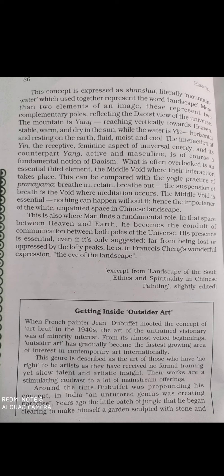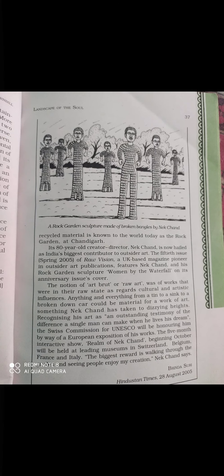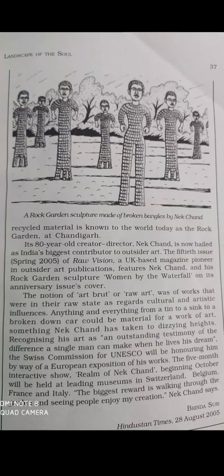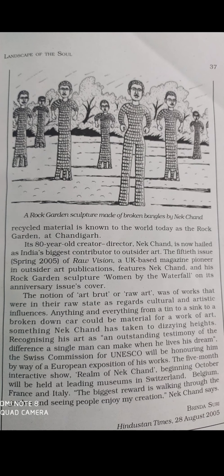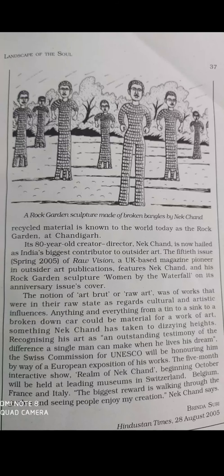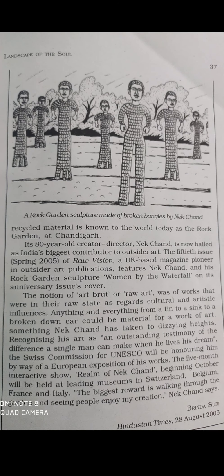Outside art — or raw art — is raw in its form; it is the product of a genius who has received no formal training. Such artists have no right to call themselves artists yet they survive on the basis of their talent, and anything and everything can be material for their work. It is totally different from traditional art. The rock garden created by Nek Chand at Chandigarh is the best example of raw art. When French painter Jean Dubuffet coined the concept in the 1940s, the art of the untrained visionary was a minority interest.